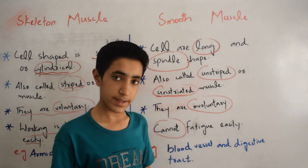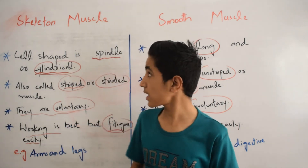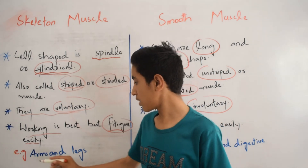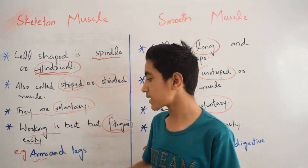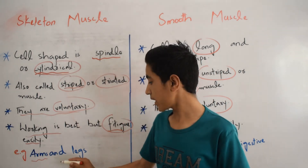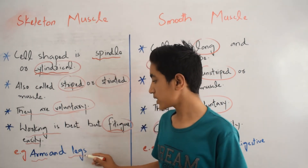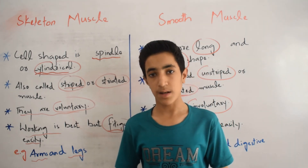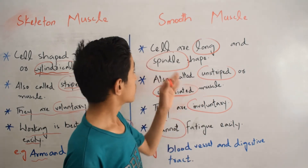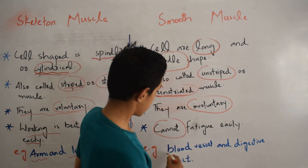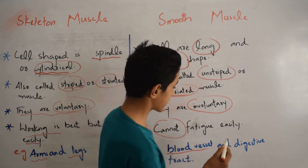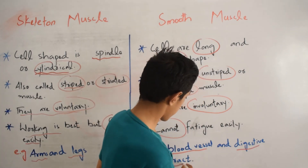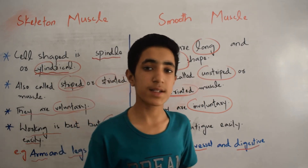Examples of skeletal muscle are the muscles of the arms and legs — these are the examples of skeletal muscle. While examples of smooth muscle are blood vessels and the digestive tract.